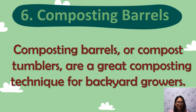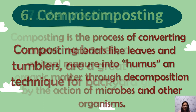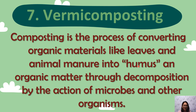Number six, composting barrels — compost tumblers are a great composting technique for backyard growers; they are self-contained and, if big enough, can produce a fair amount of compost in a short period. Number seven, vermicomposting — composting is the process of converting organic materials like leaves and animal manure into humus through decomposition by the action of microbes and other organisms; however, this can be accelerated to as short as 30 to 45 days by the use of earthworms to digest the organic materials.